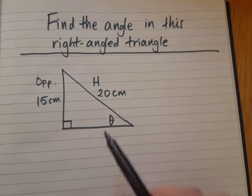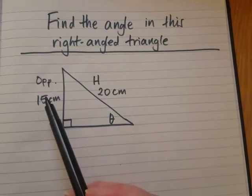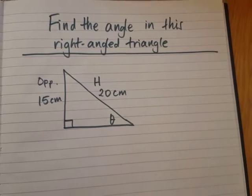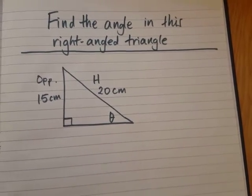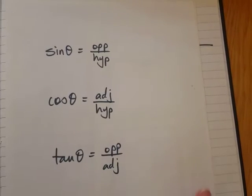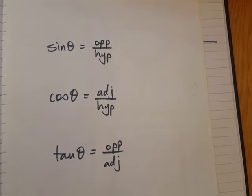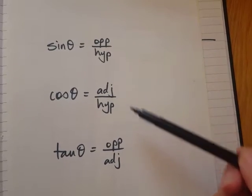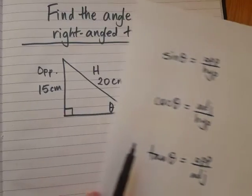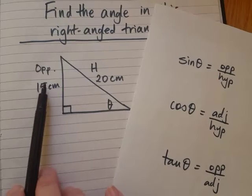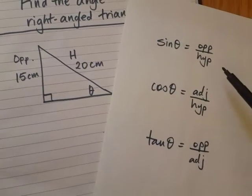And the goal is to find the angle. Opposite and hypotenuse, it's going to be one of these three formulas which we looked at earlier. Which one has the two sides we've got? Which one has opposite and hypotenuse?